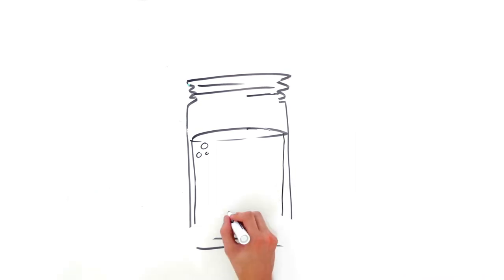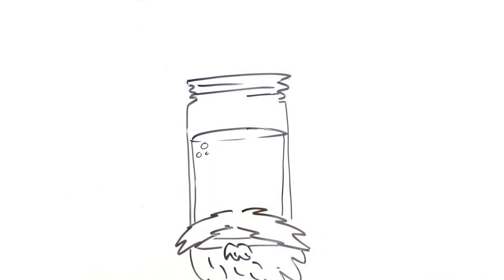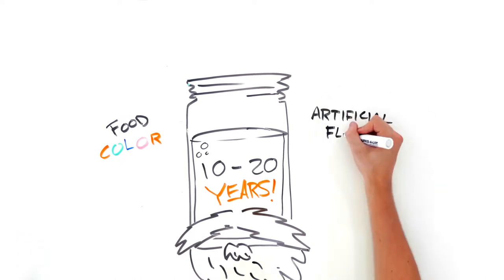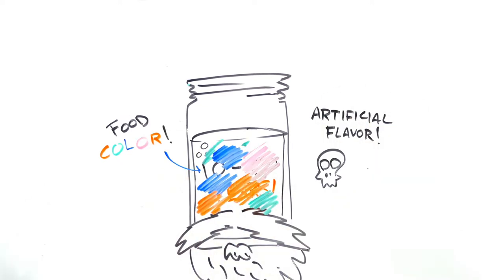Most top shelf whiskeys are aged in brand new, fire-roasted barrels for 10 to 20 years. Mid-range whiskeys may be in barrels that have been used 2 to 3 times for 4 to 9 years. And as far as well whiskey goes, let's just say it's aged 3 years or less, and there is more food coloring and artificial flavoring than you want to know about.